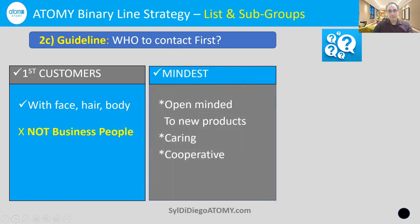The second thing to think about is mindset. Look for people on your list and in those subgroups who are open-minded to new products — people that love to try the latest and greatest K-beauty products, because we are K-beauty from Atomy Korea. Also look for people who care about others and love to help people out, whether with their health, their beauty, or just in general. And of course, people who have a cooperative mindset. Try to find at least one person from each of your subgroups who has that kind of mindset and is willing to be a customer.